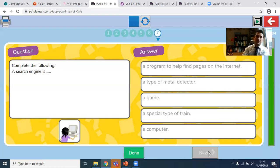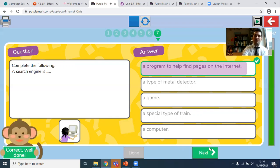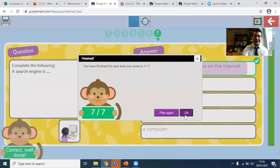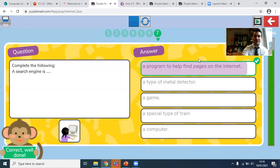And finally, the last question from last week was this one. Complete the following. A search engine is a program to help find pages on the internet, not a type of metal detector or a game. A special type program to help find pages on the internet. That was the answer we were looking for. Now, if you managed to get all that in, hopefully you then handed them in and got seven out of seven.